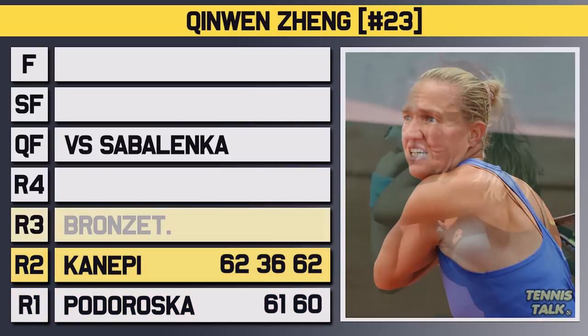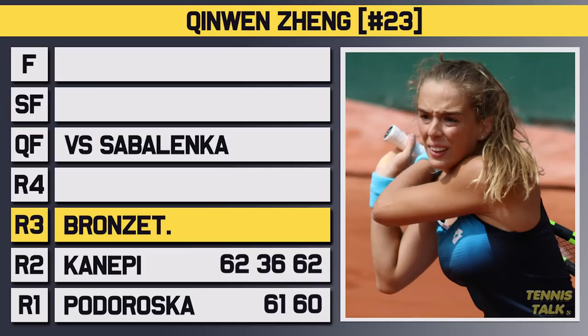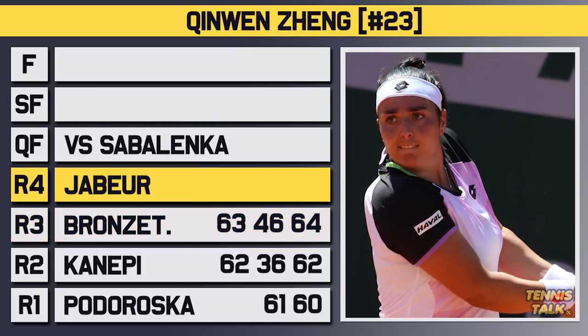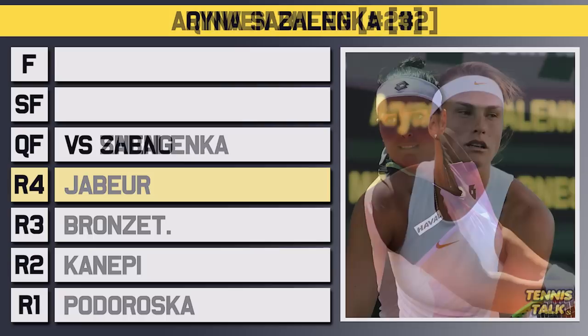In the third round she'd take on Bronzetti, who had taken out Krejčíková in the first round, and again after dropping the second set Zhang would fight back to win 6-3, 4-6, 6-4. In the fourth round she'd take on the fifth seed Jabeur, who had really struggled to get to this stage, and it showed with Zhang overpowering Jabeur in the end 6-2, 6-4 to advance to her first Grand Slam quarterfinal.